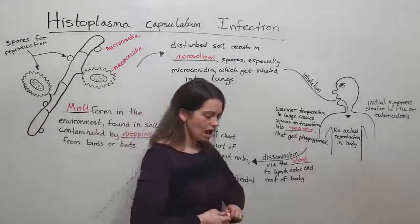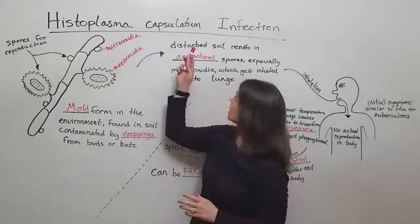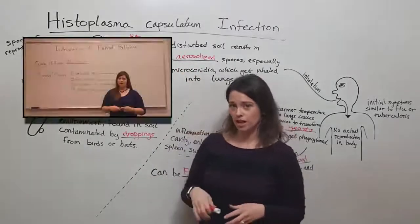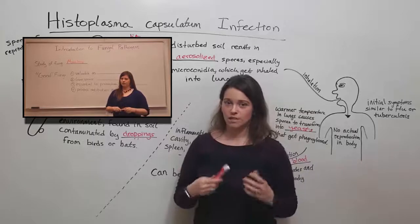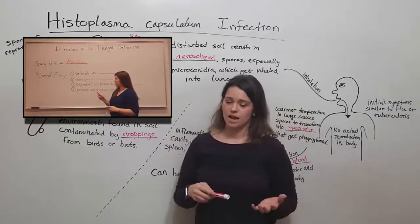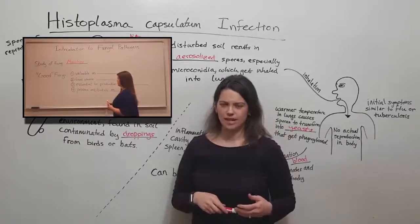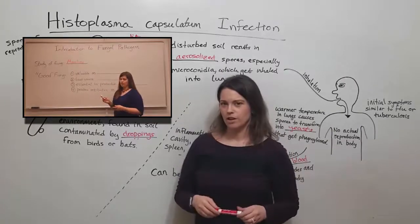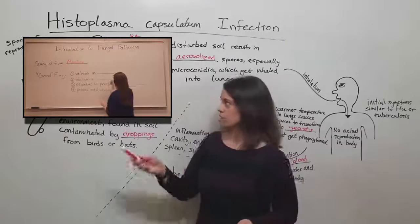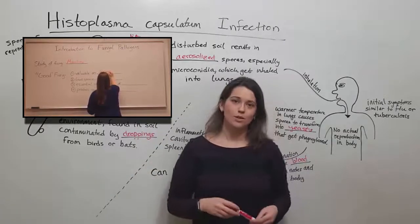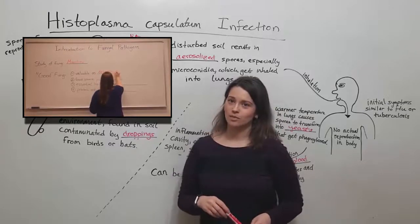And so this is how histoplasma capsulatum causes infection in human hosts. If you're interested in some other pathogen life cycles, see my playlist on pathogen life cycles. These will include things like the hookworm and schistosomiasis life cycles. You can also check out my video on introduction to fungal pathogens to learn more about other types of fungi that cause disease in humans. So that's it for today. Thanks for watching Biology Professor!